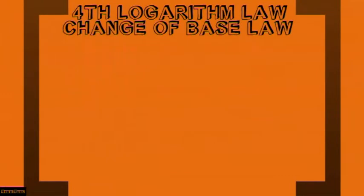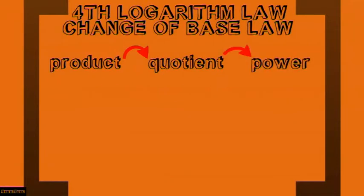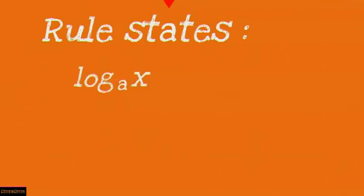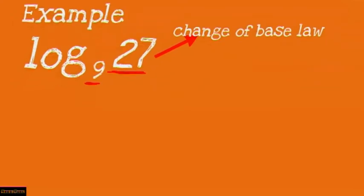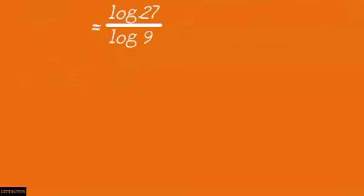So far we've looked at three logarithm laws. Let's look at the fourth: the change of base law. With the product rule, quotient rule, and power rule, we've had the same base — now let's look at an example where you have to change the base. The rule states: given log base A of X, this will equal log base M of X over log base M of A. For example, given log base 9 of 27 — these two numbers have a common factor — we apply the change of base law and end up with log 27 over log 9. Note that the original base becomes the denominator log.